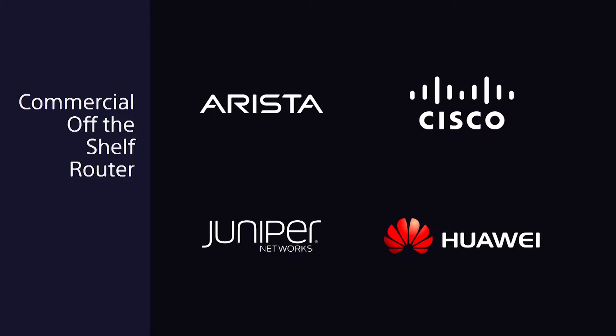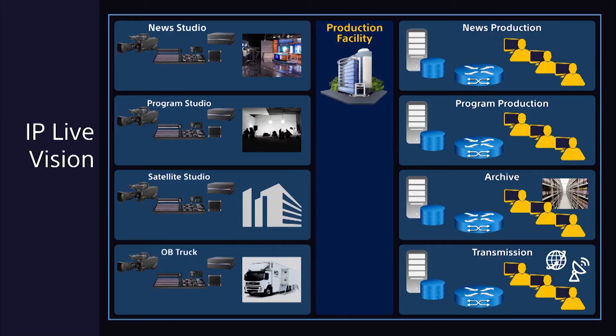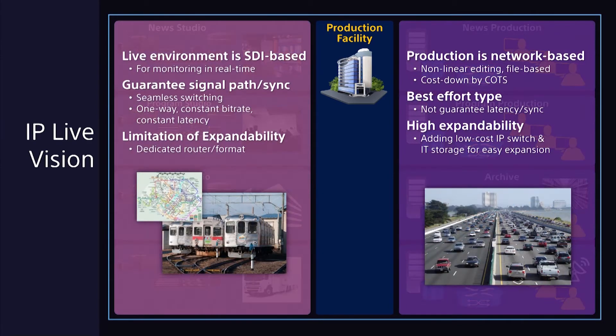Most broadcasters understand the benefits of replacing SDI transport with IP. IP Live means lower costs as we replace broadcast-specific SDI routers manufactured in small lots by specialty firms, supplanting them with off-the-shelf IP switches mass-produced by IT industry giants. IP Live also lowers costs by simplifying your infrastructure, enabling a single, unified IP network for both live production and file-based production.